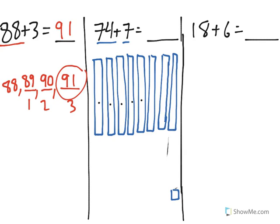Now as you can see, I have 10, 20, 30, 40, 50, 60, 70, 80. And one more, 80 plus 1 is 81. 74 plus 7 is 81.